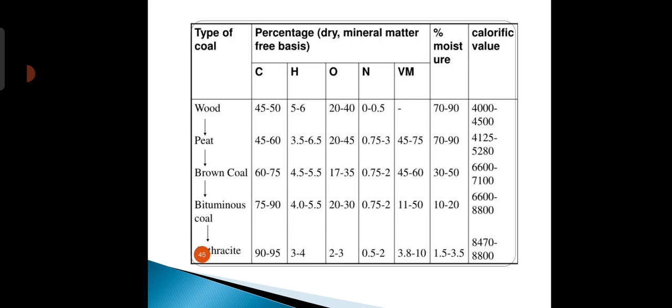For bituminous coal: the percentage of carbon is 75–90%, hydrogen 4–5.5%, oxygen 20–30%, nitrogen 0.75–2%, volatile matter 11–50%, moisture 10–20%, and the calorific value is 6,600–8,800.